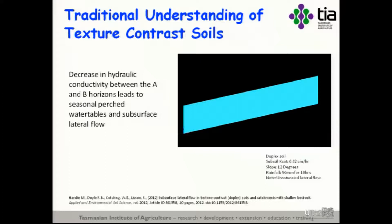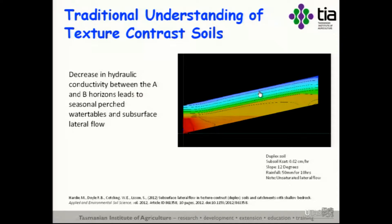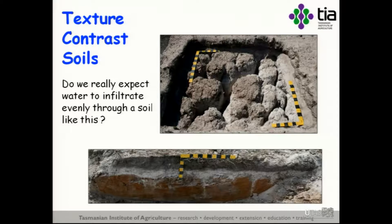We typically understand these soils to develop ponding and subsurface lateral flow between the A and B horizons. Using models which assume uniform flow, we see that rainfall in one area will cause downslope slugs of soil water through the landscape. But what happens if your texture contrast soils have really prominent clay columns and sand infills every 30 to 60 centimetres? Do we reasonably expect these models and understandings of soil hydrology to apply?